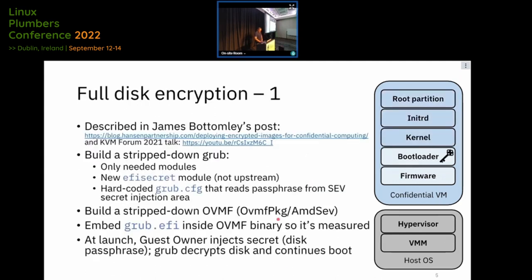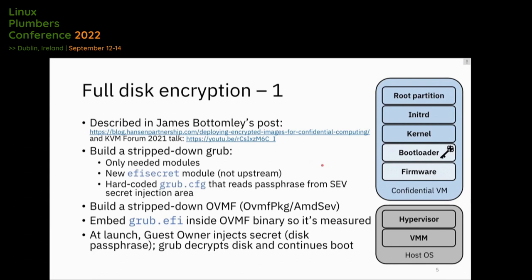The first approach for confidential VMs was built by James: do the decryption inside the guest in GRUB. We want GRUB to be part of the measurement, so we build OVMF with a built-in GRUB — one package, OVMF, has GRUB built in, and that GRUB has a module which allows reading the secret memory. Nobody has to type the secret; you do pre-boot secret injection in SEV, then GRUB decryption — GRUB decrypts the disk and continues to load the kernel, initrd, and all the rest.